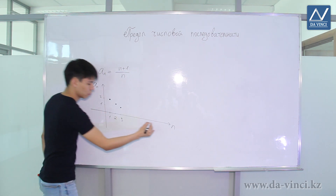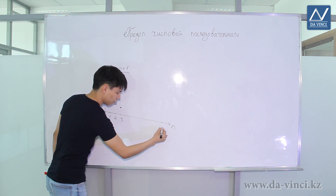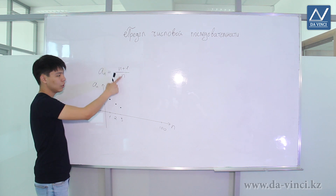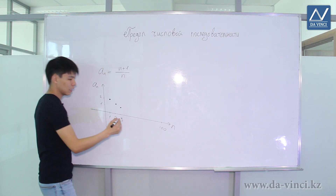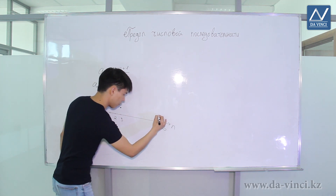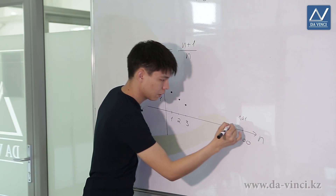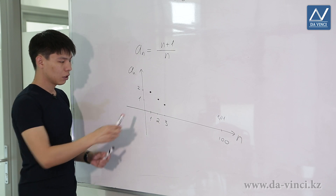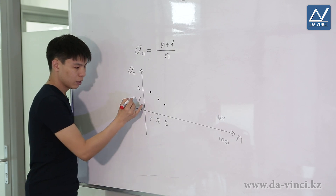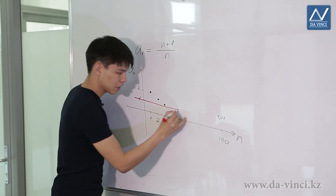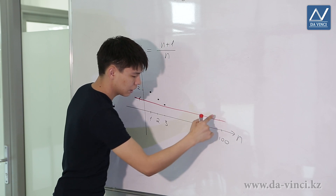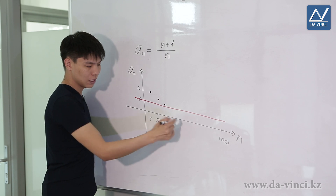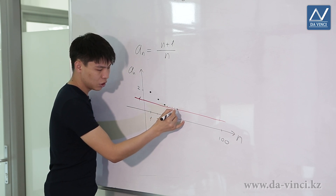If N equals, say, 100, then aN equals 101/100 or 1 and one-hundredth — approximately this value. Pay attention that the elements of the sequence gradually approach the value 1 but never reach it. The higher the index of the sequence element, the closer these points will be to the number 1.